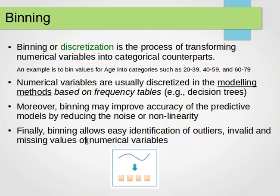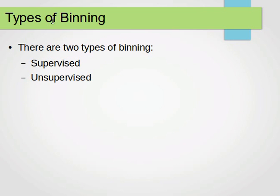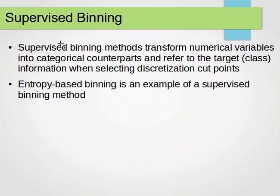We have numerical values, i.e., continuous — people often use these words interchangeably. So we take a continuous variable and convert it into a categorical or discrete variable. There are two types of binning: supervised and unsupervised. In this video, we'll be covering supervised binning and give one example.